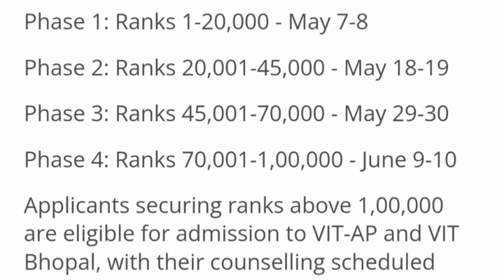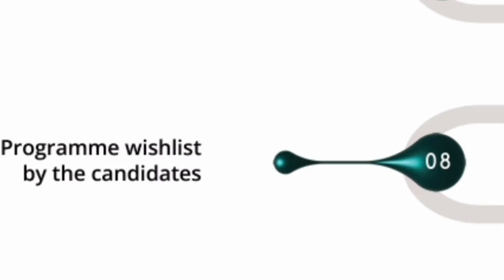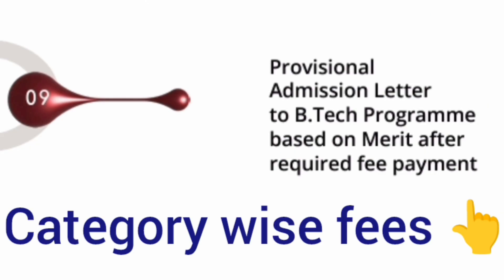Step eight is the program wish list by candidates, which is essentially choice filling. Depending on the branches available across different campuses, students will have to do choice filling, ordering from which seat they want to take. Step nine will be the provisional admission letter to the B.Tech program for students based on merit.